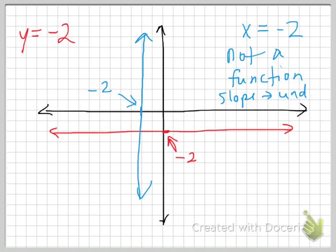However, for the horizontal line, y equals negative 2, it is a function. And what is the slope of a horizontal line? Yeah, it's 0.